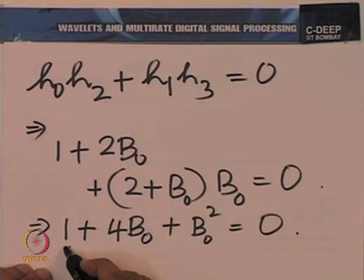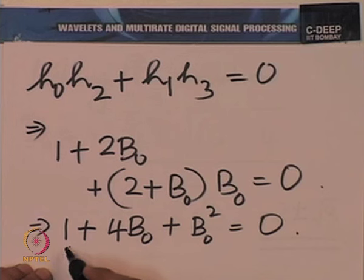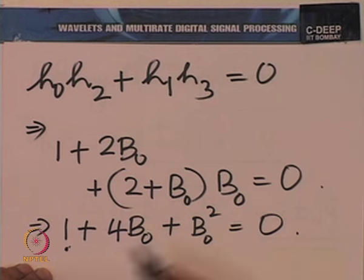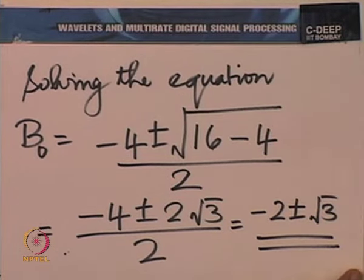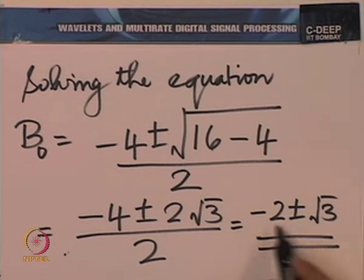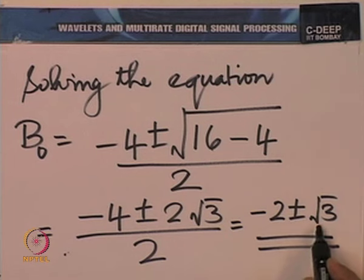What distinguishes these two solutions? From the quadratic equation, the product of the roots equals 1, so if one lies inside the unit circle, the other must lie outside. They cannot lie on the unit circle because neither has magnitude 1. Looking at the solution -2 - √3, it clearly has magnitude greater than 1, and the other solution has magnitude less than 1.